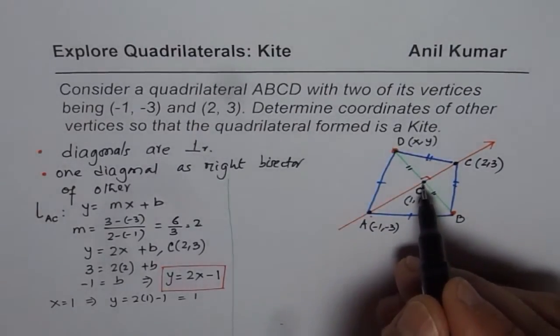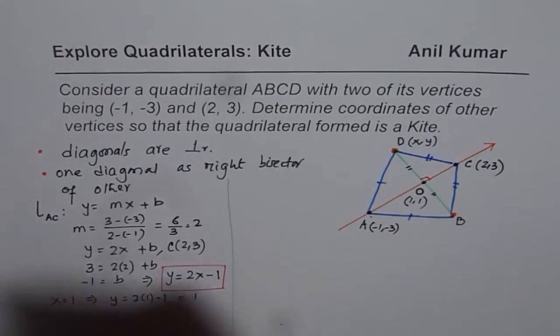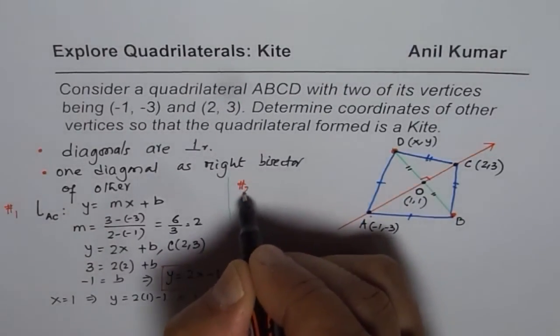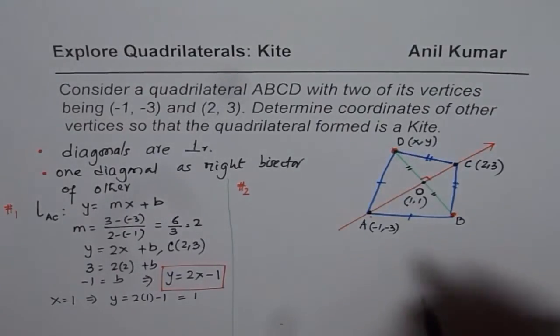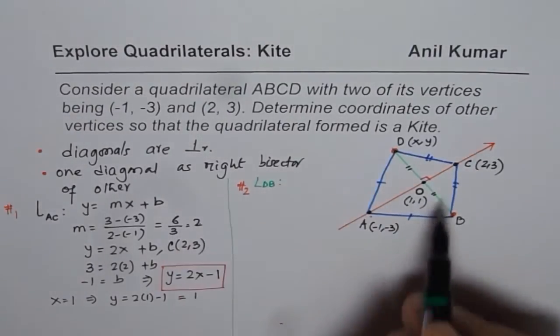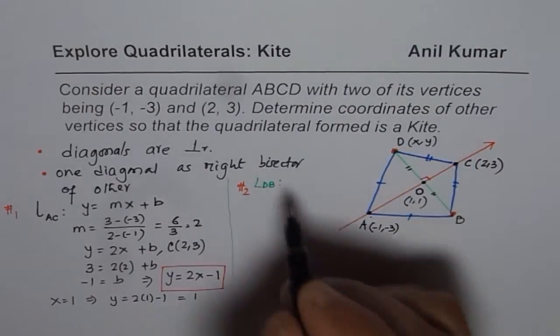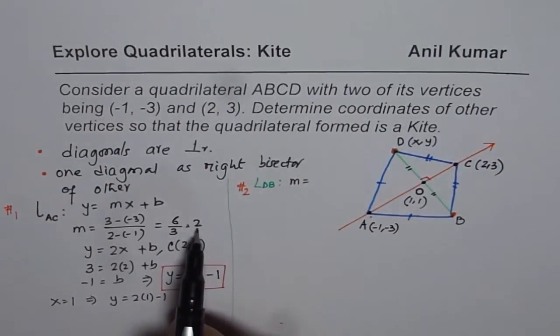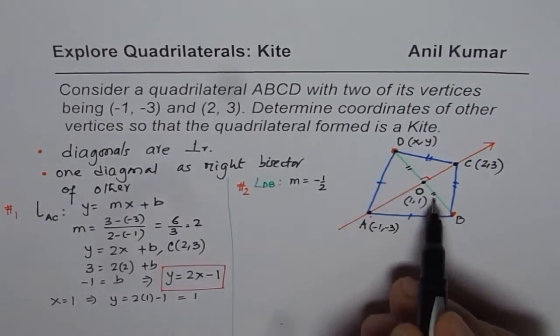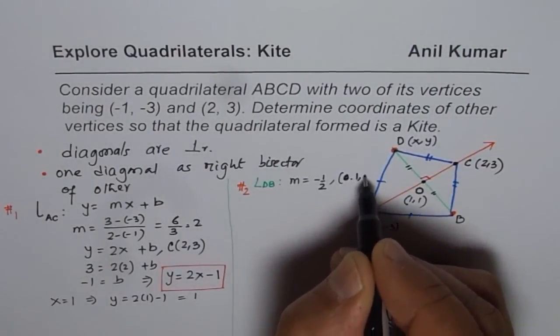Once we get point O, we can find equation of line DB. So that is the next part. This is our line 1. Now let's find equation of line 2 and that will be line DB. What we know here is, they are at right angles and therefore slope of DB should be negative reciprocal of 2, that is -½. And this DB also goes through point O, which is (1, 1).